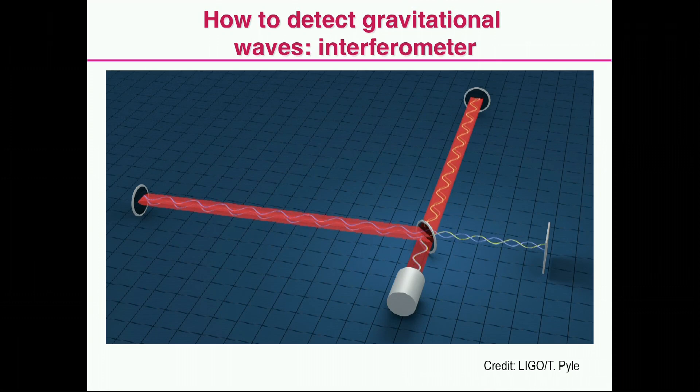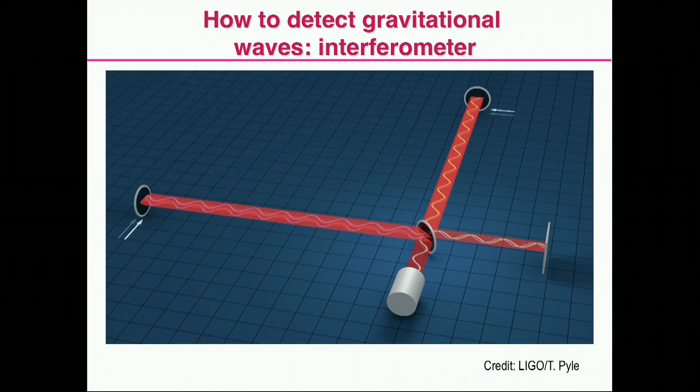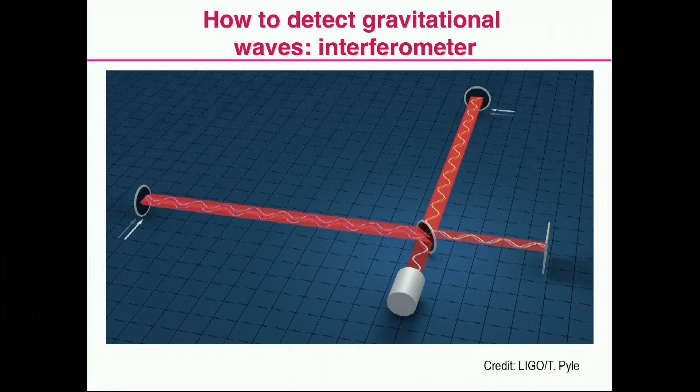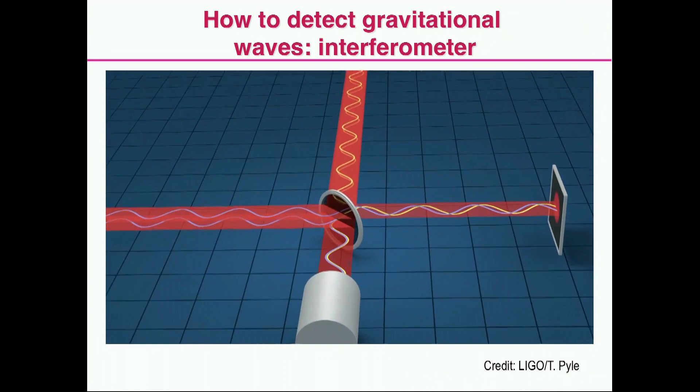But if these distances change — because, for example, a gravitational wave is going through — then on this photocell you will see more light, less light, more light, less light. Now, to measure a part in 10 to the 21 with these interferometers was not trivial.